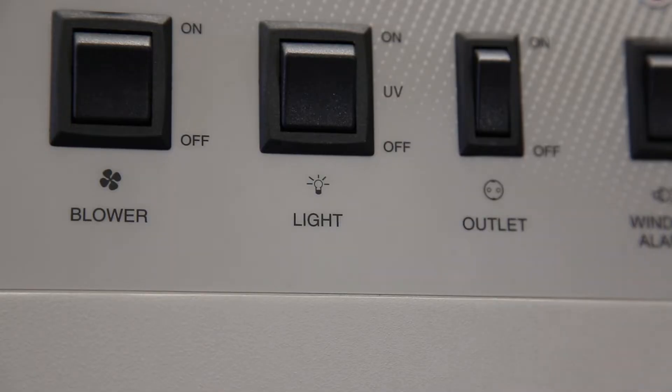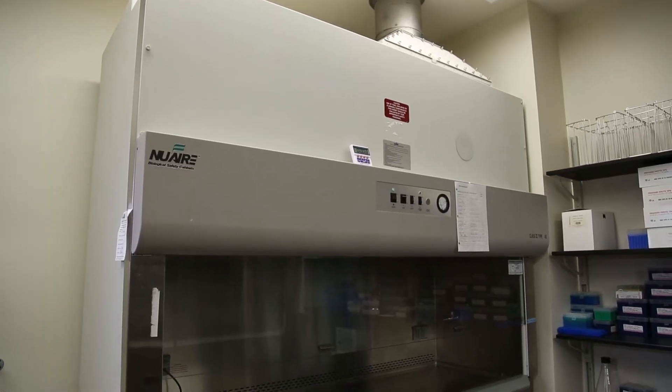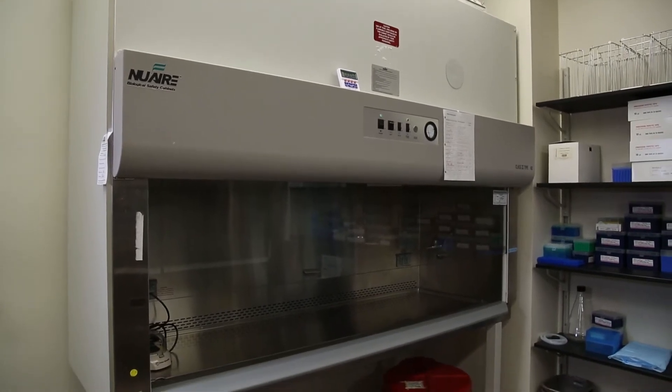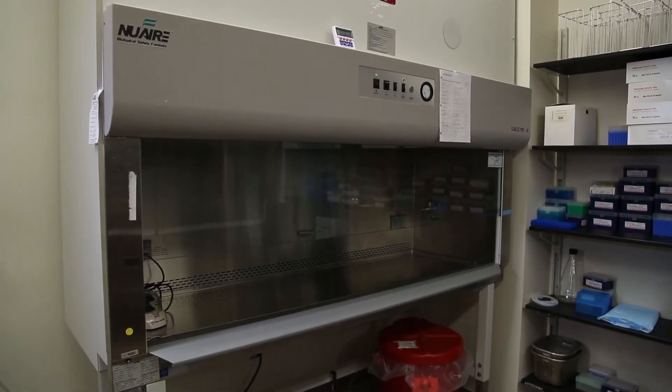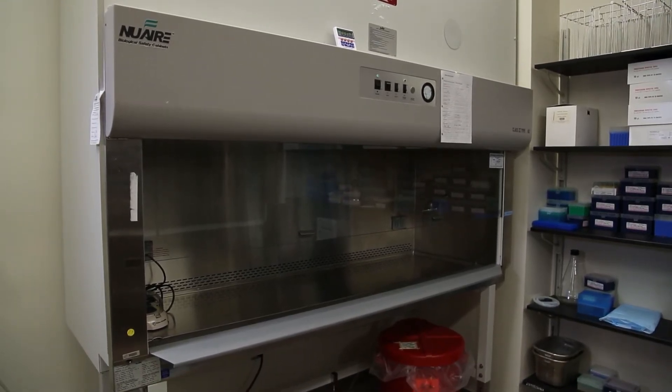If you have a UV light, you may or may not turn it on as per your SOPs. Some labs will leave their BSC blower motor running continuously. In that case, you could turn off the light but leave the sash open.